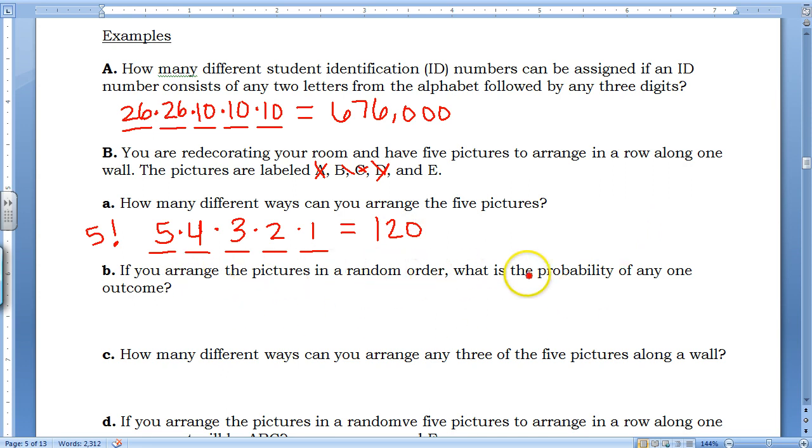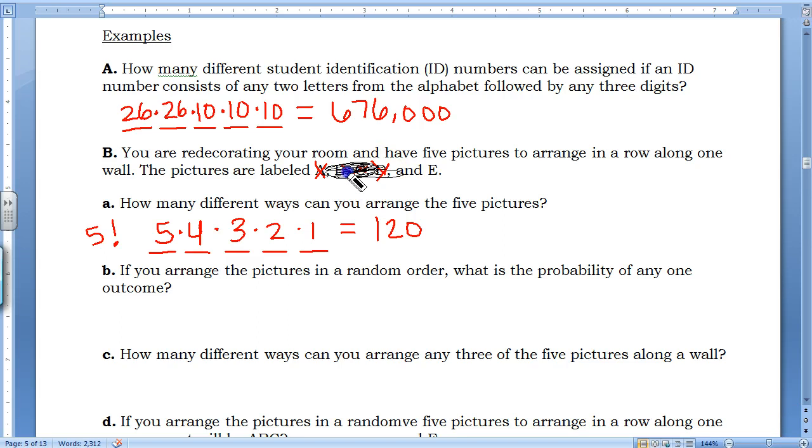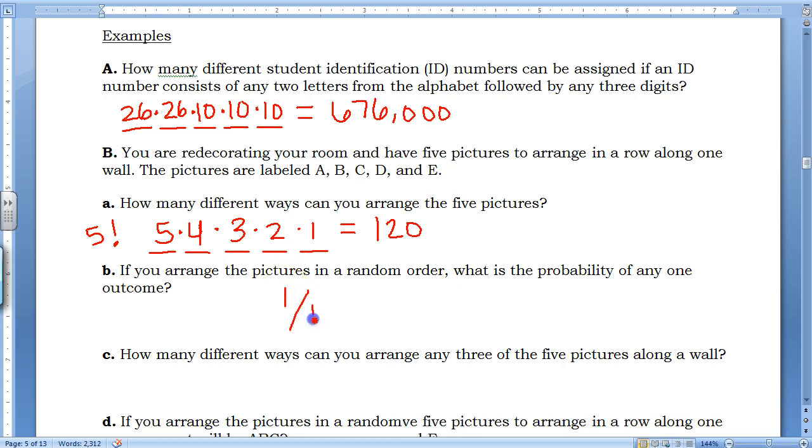If you arrange the pictures in a random order, what is the probability of any one outcome? Well, if I wanted the pictures to be like ABCDE, for example, there's only one possible way to do ABCDE. If I wanted them backwards, EDCBA, there's only one possible way to do that. So the probability of any one specific outcome is 1 out of 120.